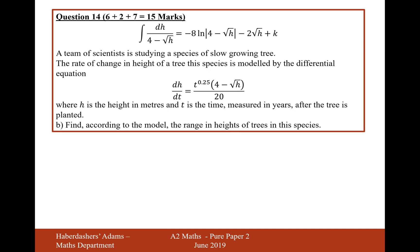Let's now move on to part b. So a team of scientists is studying a species of slow growing tree. The rate of change in height of the tree of a species is modelled by this differential equation, where h is the height in metres and t is the time, measured in years after the tree has been planted. Find, according to the model, the range of the height of the trees in this species. So the range of the height of the trees, by the fact that the trees don't shrink.